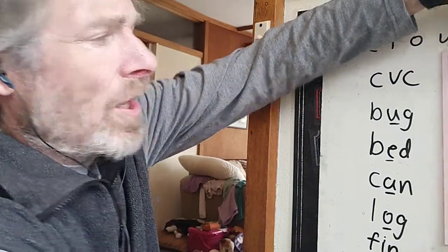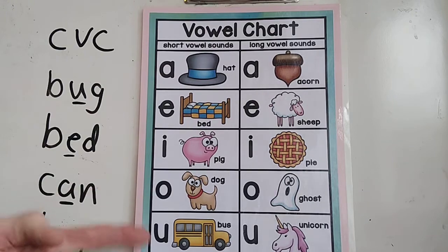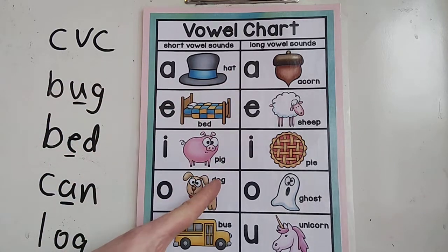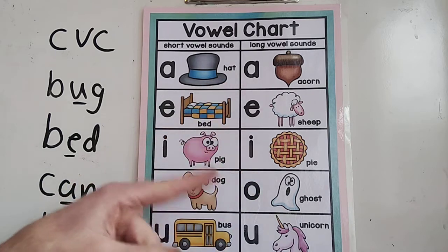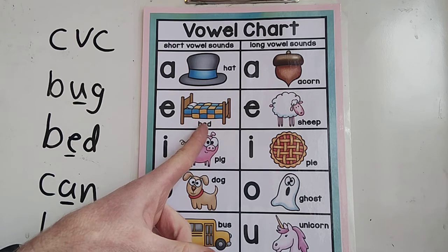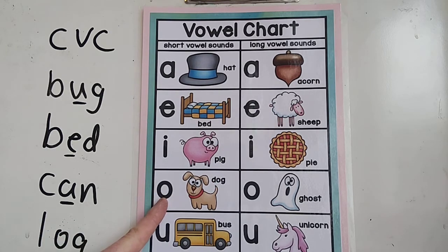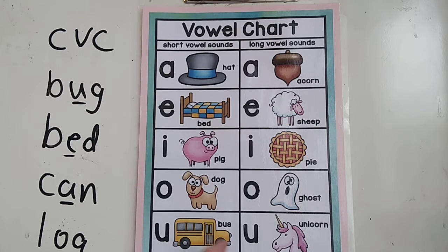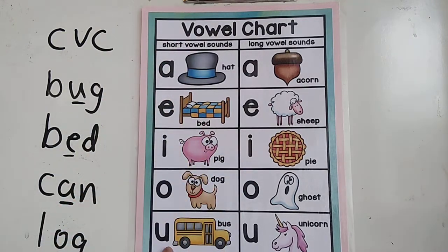I'm going to put this chart up here. This is our vowel chart — A, E, I, O, and U. Over here we have short vowels — short vowel sounds. This is where you find them in the middle of words, just like the words we wrote here. A makes the 'ah' sound, like 'hat'. E makes the 'eh' sound, like in 'bed'. I makes the 'ih' sound, like in 'pig'. O makes the 'ah' sound, like in 'dog' or 'octopus'. And U makes the 'uh' sound, like in 'bus'. These are called the short vowel sounds.